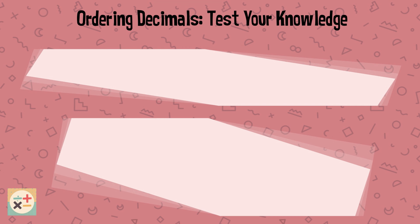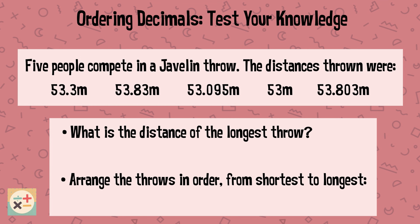Question 10. Five people compete in a javelin throw. The distances thrown were 53.3 meters, 53.83 meters, 53.095 meters, 53 meters, and 53.803 meters. Find the distance of the longest throw, and then arrange the throws in order from shortest to longest.